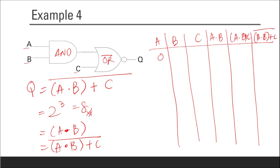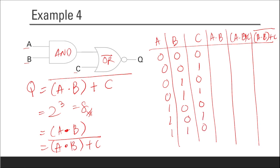Listing all 8 input combinations: 0,0,0 — 0,0,1 — 0,1,0 — 0,1,1 — 1,0,0 — 1,0,1 — 1,1,0 — 1,1,1.